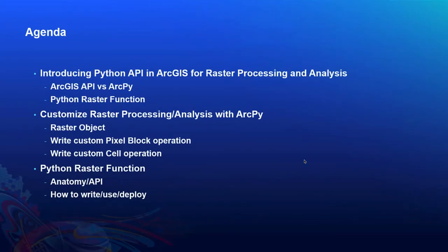Here's a quick agenda of the things we're going to cover today. We're going to introduce the different Python APIs offered by ArcGIS for raster processing analysis — the ArcGIS API for Python and ArcPy Python modules. We'll also cover the usage of Python raster functions to design custom algorithms not offered by ArcGIS for image processing. We'll show examples utilizing raster objects, pixel block operations, and raster cell operations to write your own pixel array or raster cell processing algorithms, implementable using ArcPy.